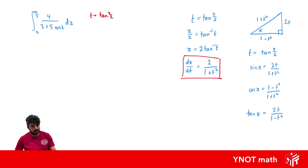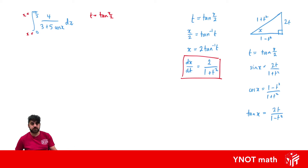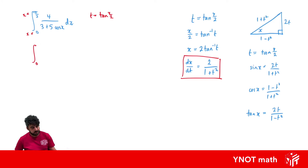We also have to change our limits, since they're currently in terms of x. If x = 0, the new limit is tan(0/2) = 0. If x = π/2, we get tan(π/4) = 1. So the upper limit changes to 1.